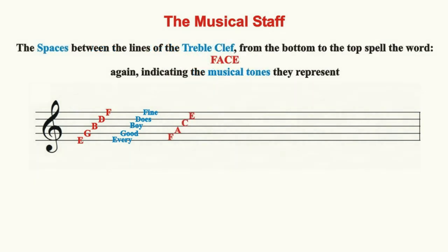The spaces between the lines of the staff in the treble clef, from bottom to the top, are named F, A, C, and E. For memory's sake, they conveniently spell the word FACE. Like the lines, each space represents a specific tone. The tones from the lowest to the highest space sound like...